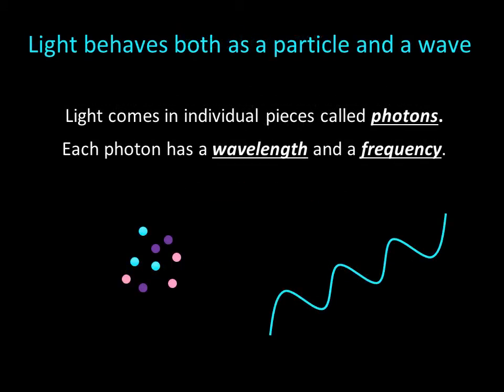Experiments show that light behaves as both a particle and a wave, depending on how you measure it. We say that light comes in individual pieces, called photons, that have properties of both particles and waves. Like any particle, photons can be counted individually, and like any wave, each photon is characterized by a wavelength and a frequency. I know this all must sound very strange, but it is fundamental to our modern understanding of physics.